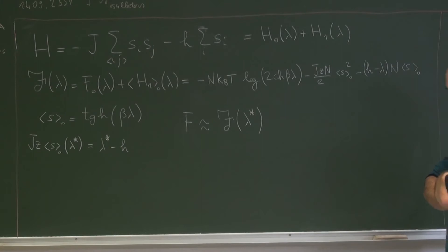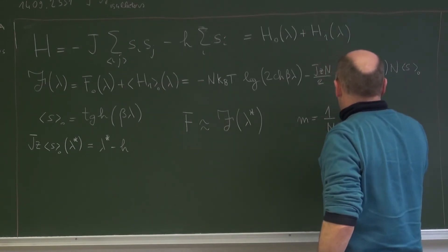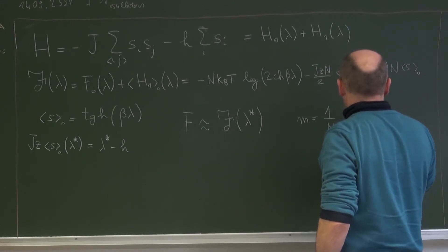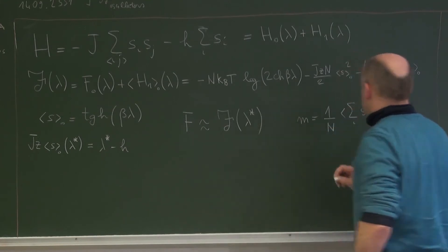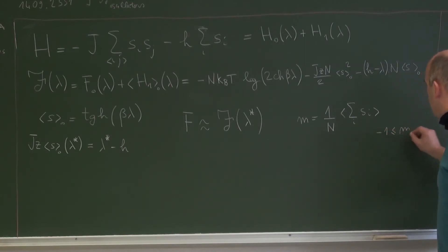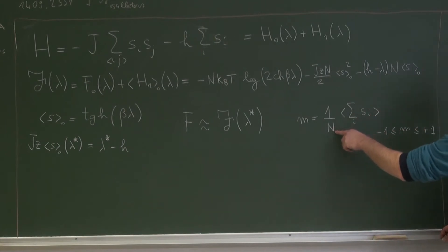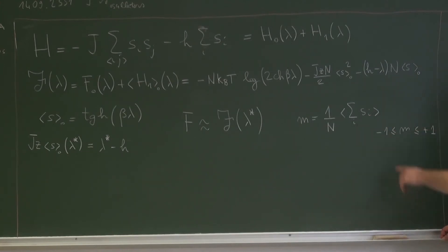What do we want to do next is to calculate the magnetization of our Ising model. Magnetization is defined as 1 over N, the average of the sum of all the spins. N is the number of spins in the system. The small m is a quantity which goes from minus 1 to plus 1. When it's plus 1, it's when all the spins are pointing up, so all Si are plus 1. Summed over and divided by the number of spins, I get exactly plus 1. Or if all the spins are pointing down, then I get minus 1. These are the two extrema of this magnetization — this is the magnetization per spin.